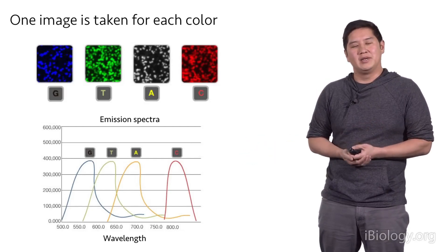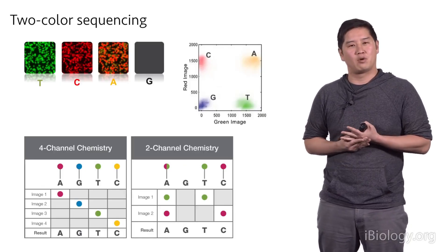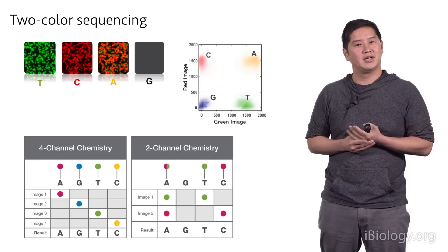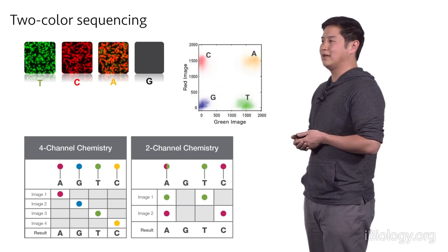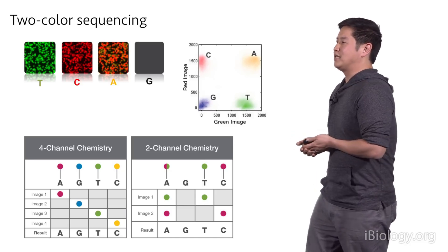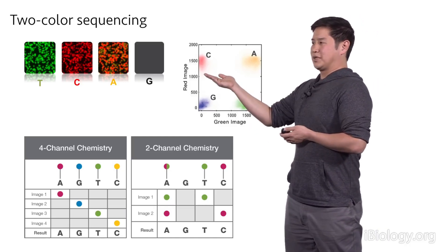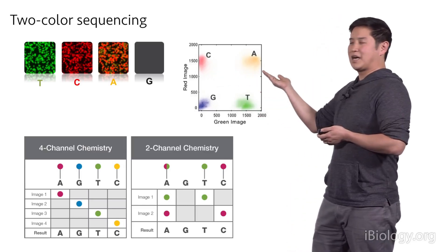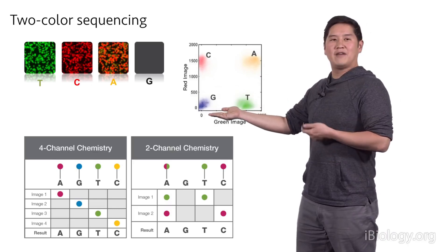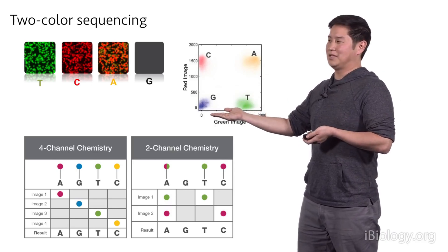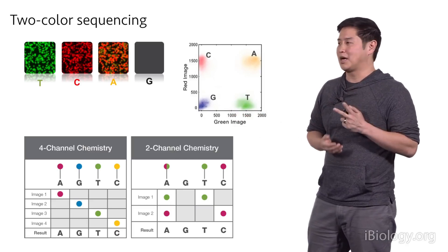So a few years ago, Illumina introduced two color chemistry. So instead of using four colors to represent four bases, they're now using two colors to represent four bases. In this case, they're using red and green. And the way this works is that you have T's, which are green, C's, which are red, A's, which are actually a mix of both colors. So you'll see them in both images. And then G's actually have no color or no signal. And so this is how you can encode four different bases with only two colors.